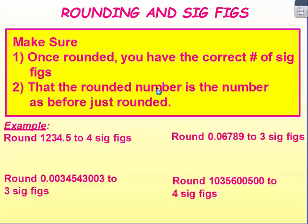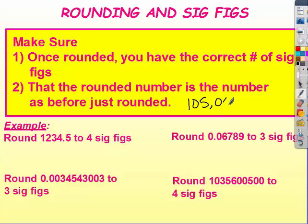Also, make sure that the rounded number is the number that you had before only rounded. What that means is if I had 105,001 and I wanted to round that to three significant figures, I couldn't just put 105, because 105 is not the same as 105,000. So I would have to just drop those last digits.